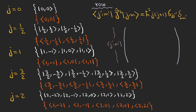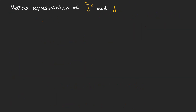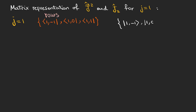Now let's find the matrix representation of J squared and Jz operators for quantum number j equals 1. The set of bra vectors are the rows and we can use kets to show the columns of the operator's matrix. Let's start with J squared.